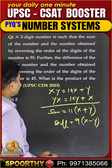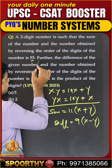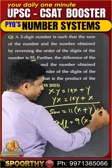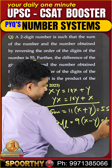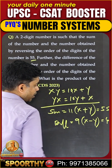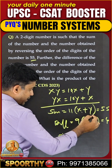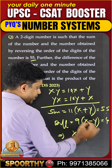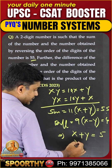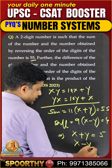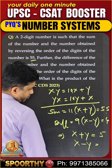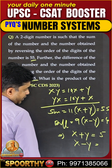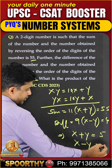So, what is given in the equation? Sum is 55, difference is 45. First of all, find out what x and y are. x plus y equals 55 by 11, which means it is 5. x minus y equals 45 by 9, which is also 5.